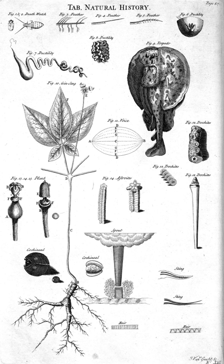Natural history is a domain of inquiry involving organisms including animals, fungi and plants in their environment, leaning more towards observational than experimental methods of study. A person who studies natural history is called a naturalist or natural historian. Natural history encompasses scientific research but is not limited to it. It involves the systematic study of any category of natural objects or organisms.